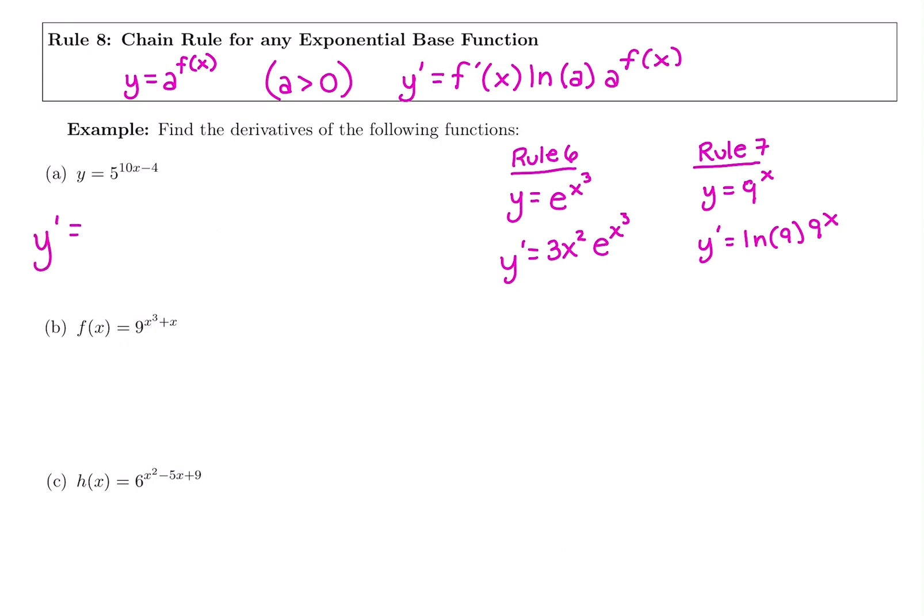Looking at this 5, it's being raised to the 10x minus 4. So it's like rule 7 because the base is not e, and it's like rule 6 because the power is not just x. So we're going to start, really overwhelming, but we're going to start and say the power is not just an x, so let's take the derivative of that. Derivative of 10x is 10. That was our mini rule. Derivative of negative 4 is 0. It's a constant. So we start with the derivative of the power just like we do on rule 6.